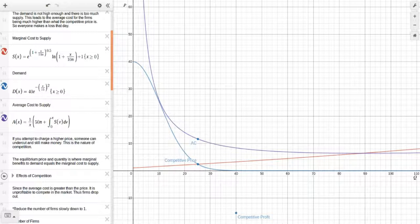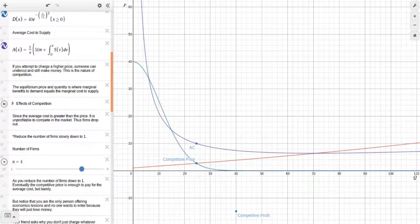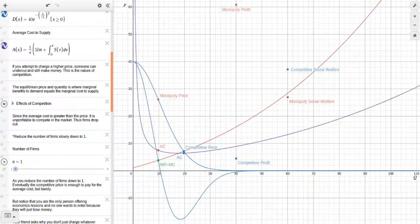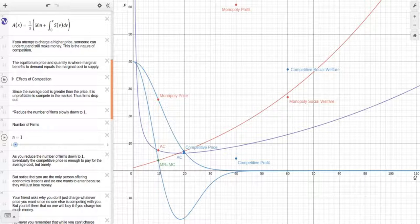So let's slowly reduce the number of firms down to one, N being the number of firms. As you see as firms drop out, the supply curve shifts inward because the supply is being reduced. The average cost is coming down a bit because less money is being spent paying those fixed costs. As we reduce the number of firms down to one, eventually the competitive price is enough to pay for the average cost just barely. Blue dot right here is a competitive profit. But notice that you're the only person offering economics lessons and no one else wants to enter because they will just lose money.